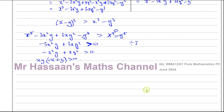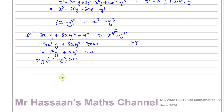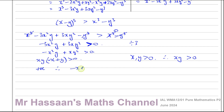Now comes the reasoning. We know that x and y are both greater than 0, therefore xy is also greater than 0 — x times y is positive. Since the product xy times minus x plus y is greater than 0, and xy is positive, then minus x plus y must also be positive. A positive times a negative would not be greater than 0; it is only greater than 0 if both factors are positive. So if minus x plus y is greater than 0, therefore y is greater than x — which is what we had to prove.